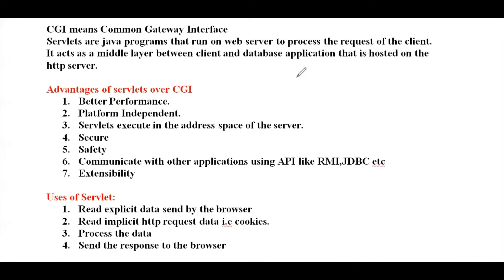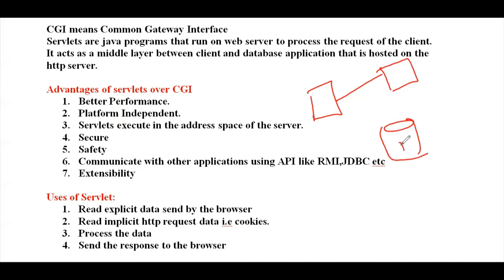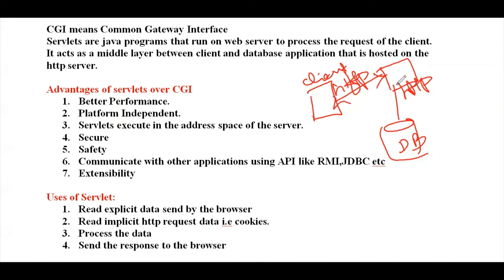In a web application, there will be a client sending requests to the server. For example, if the client wants to retrieve some data from the database, the client cannot interact with the database directly. The client will interact through the browser, sending an HTTP request to the HTTP server — the web server — which will then contact the database through the servlet.